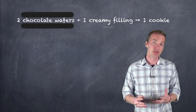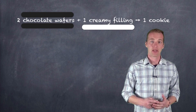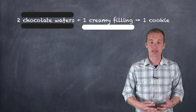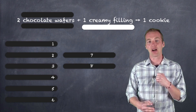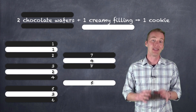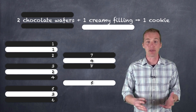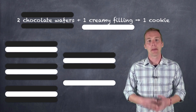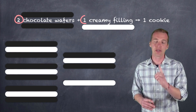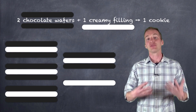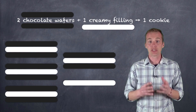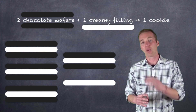You would have to have two chocolate wafers and one creamy filling to give you one cookie. Now let's say that you were in an Oreo factory and you had to put together a number of cookies, and you were given eight pieces of wafer and five creamy fillings. If we were to just take a look at the numbers, you would suspect that you would run out of creamy fillings first because five is less than eight. But you understand that for each cookie you need two chocolate wafers and only one creamy filling, so in actuality you're going to run out of chocolate wafers first.